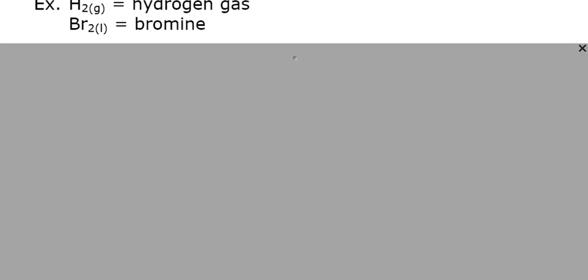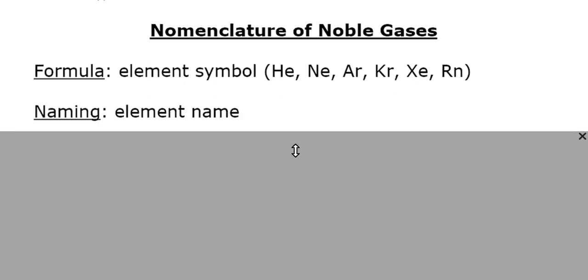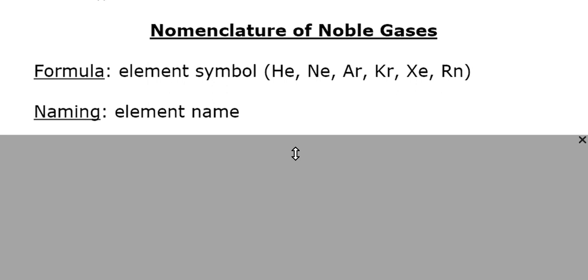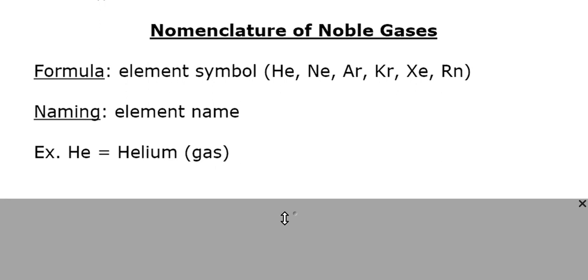Next, we're going to look at how to name noble gases — these are very easy. If you're writing the formula for a noble gas, all you need to do is write down the symbol. For its name, you just use the element name. For example, helium has the symbol He, and you can write either 'helium' or 'helium gas.' The word 'gas' isn't always necessary since noble gases are implied to always be gases.